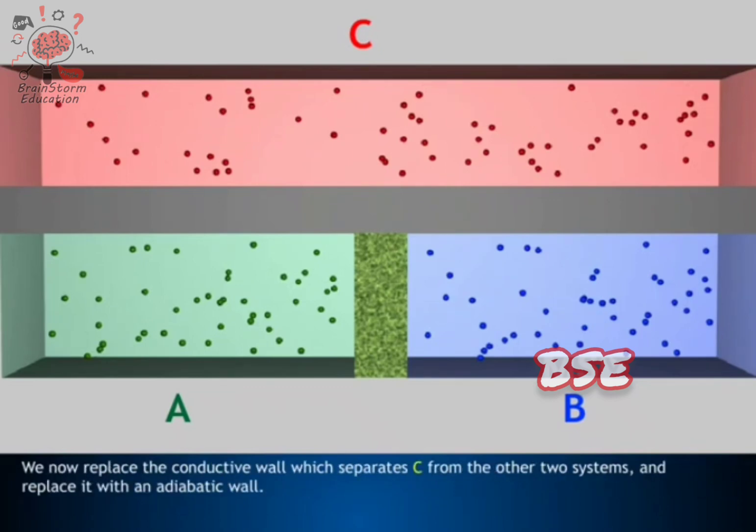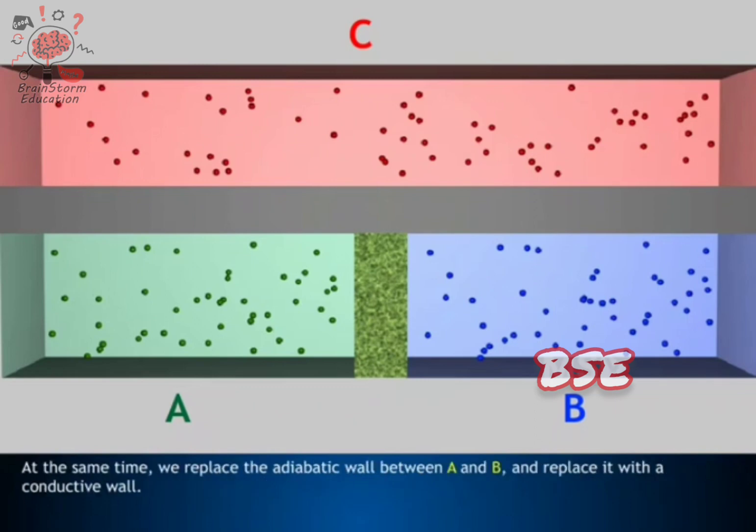We now replace the conductive wall, which separates C from the other two systems, and replace it with an adiabatic wall. At the same time, we replace the adiabatic wall between A and B and replace it with a conductive wall.